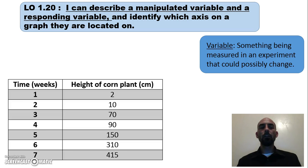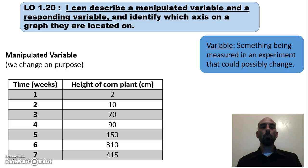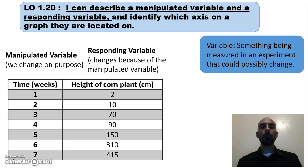Let's look at another example. In this experiment, they observed the height of a corn plant. They didn't actually change time — what they did was change the time at which they observed the plant. So the manipulated variable was when they observed the plant, from week to week, and in response to that, the height of the corn plant changed.